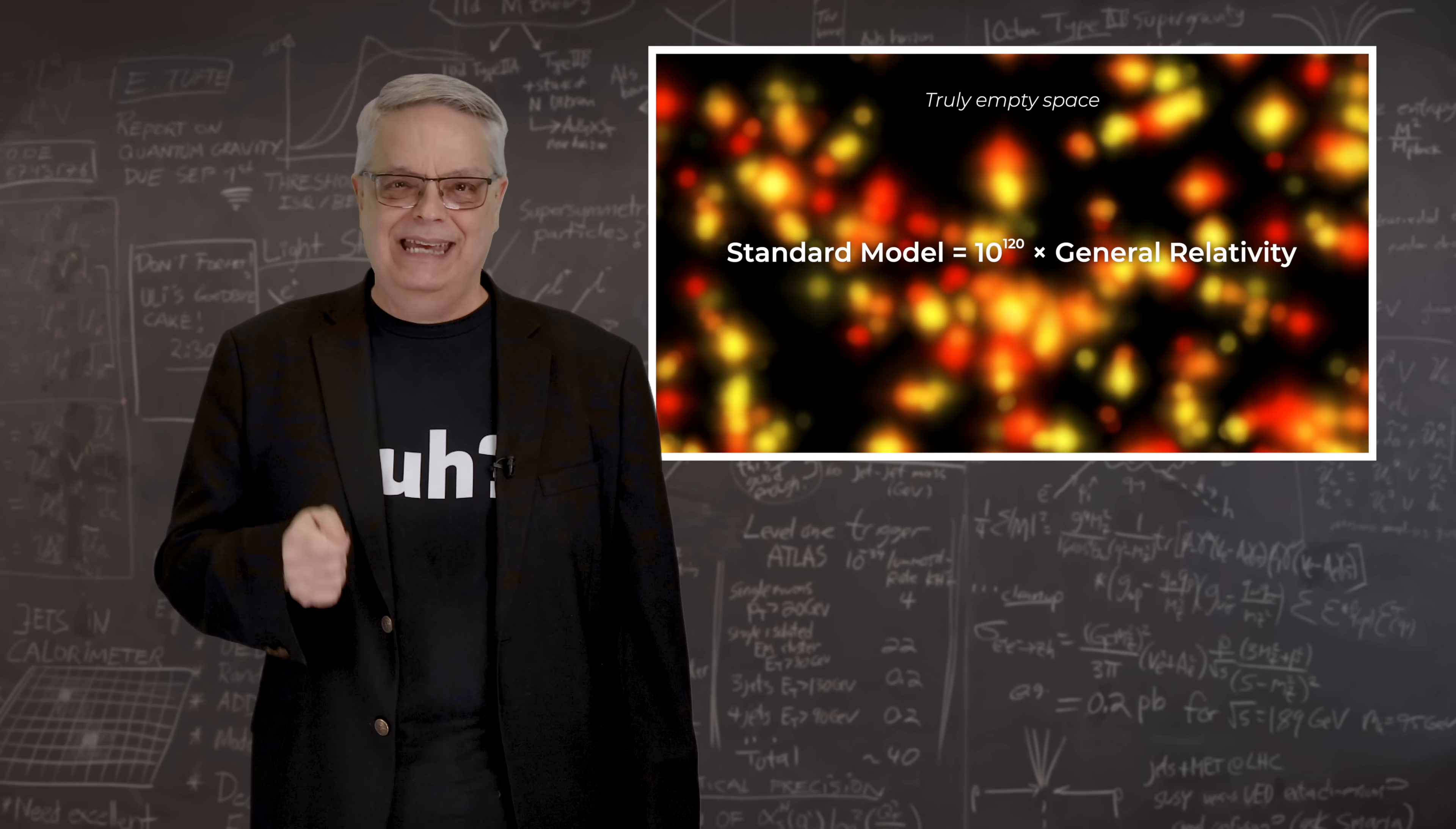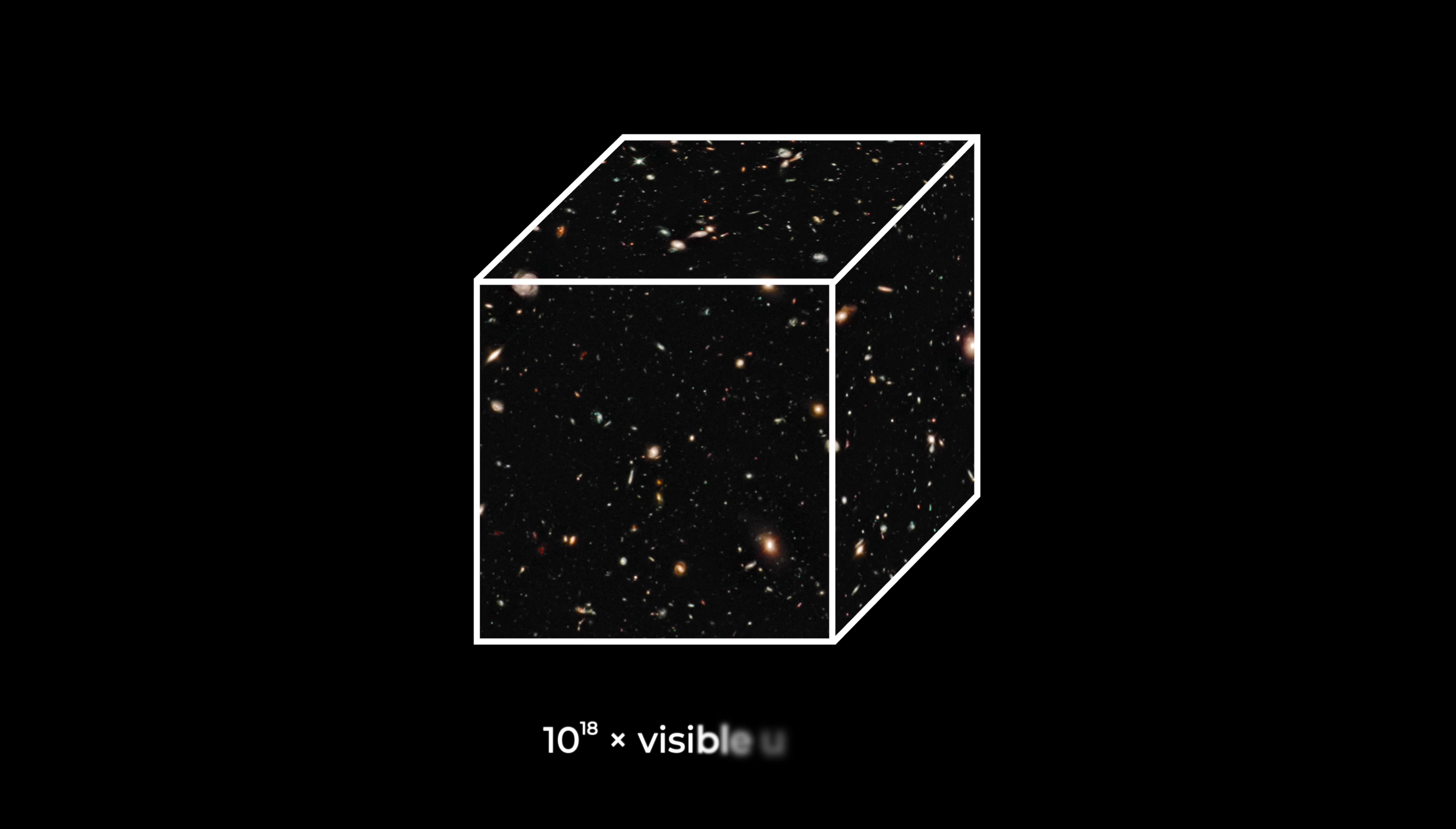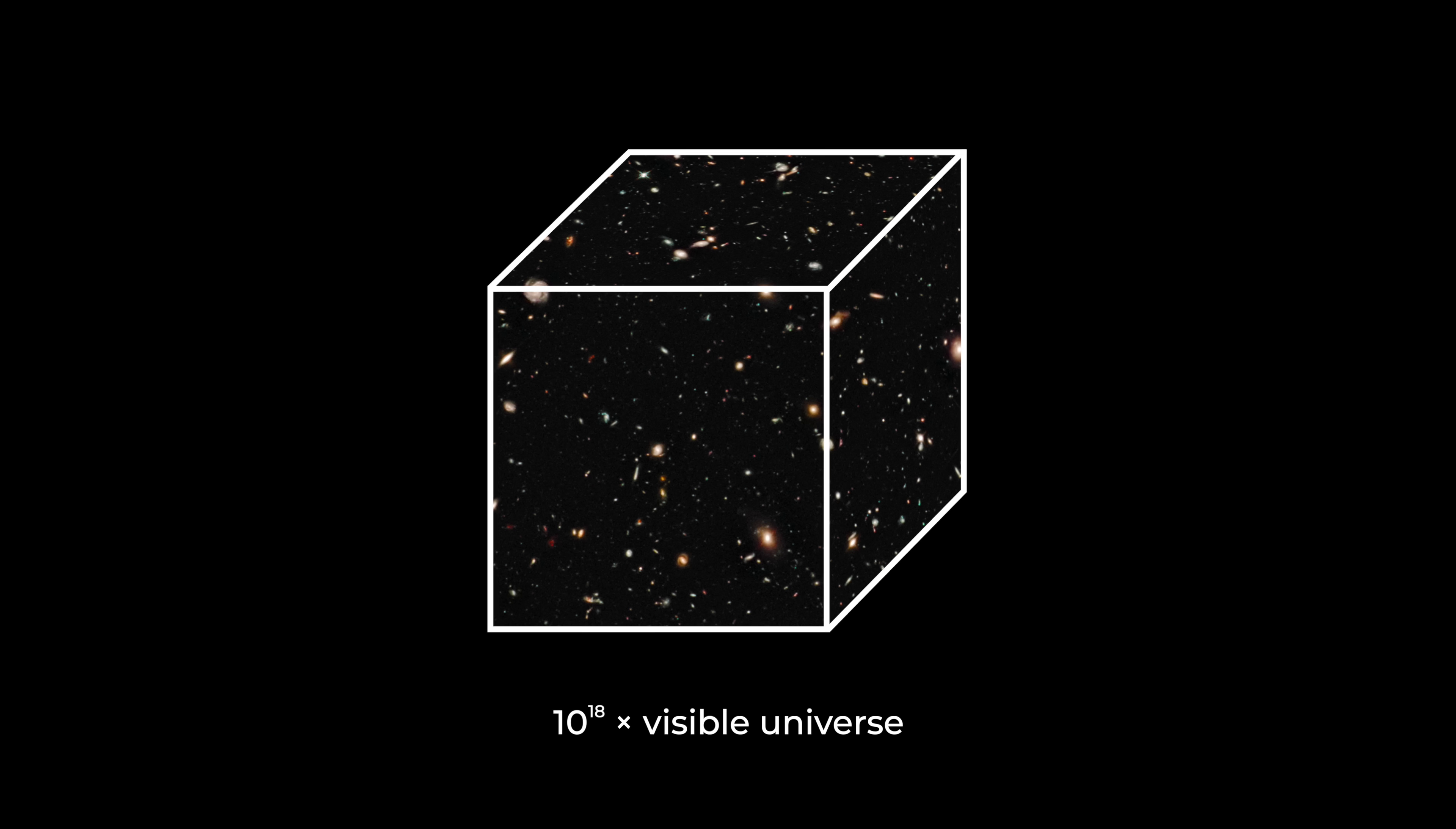The density is a staggering 10 to the 120 times bigger than the dark energy density. To understand just how big that is, that's equivalent to taking all of the mass of the visible universe, multiplying it by a hundred quintillion, and then packing all of that mass into a cube, a meter on a side. That's a big disagreement.